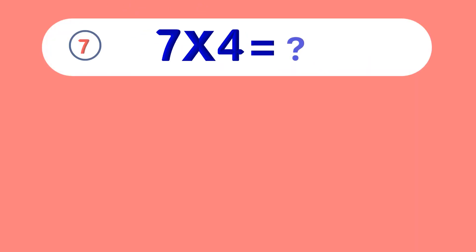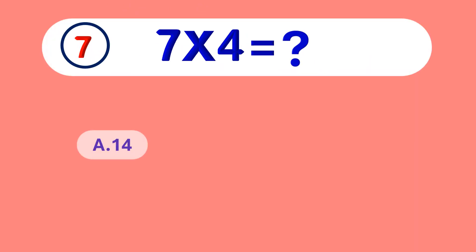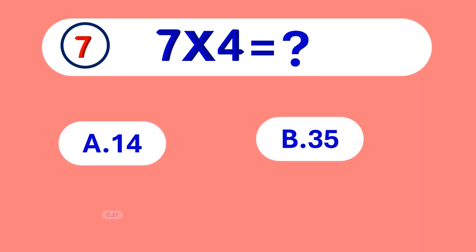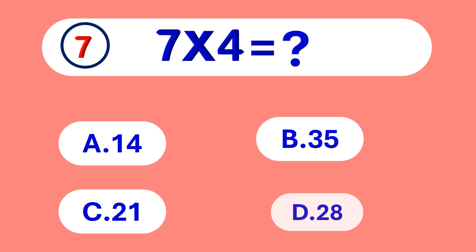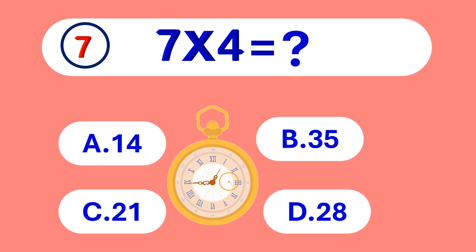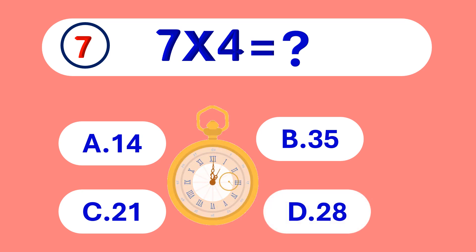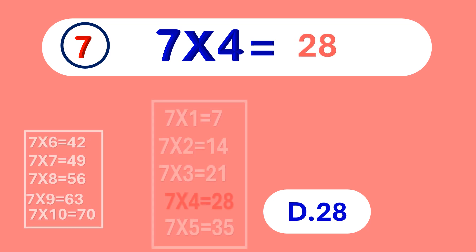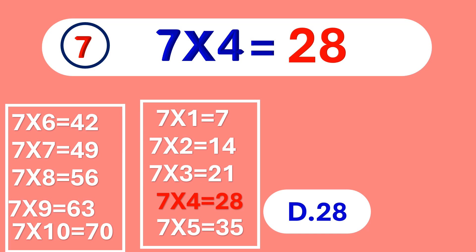7 times 4 is equal to... 28. 7 times 4 is 28.